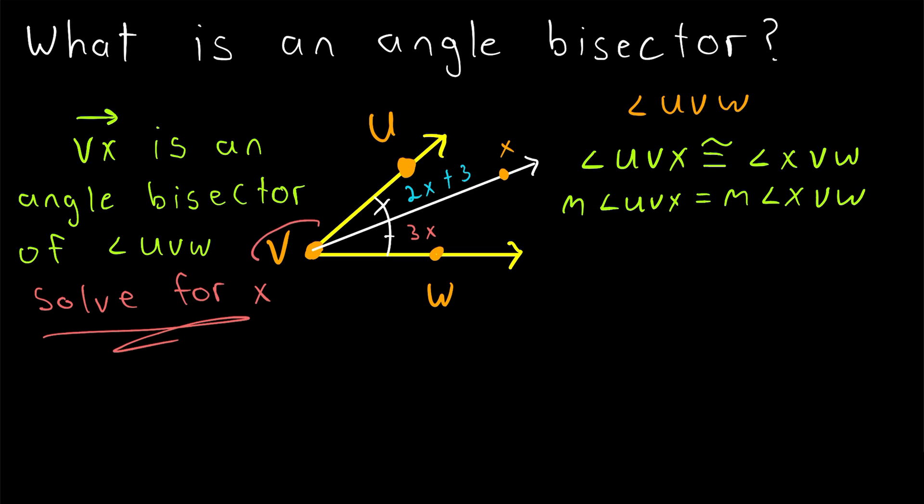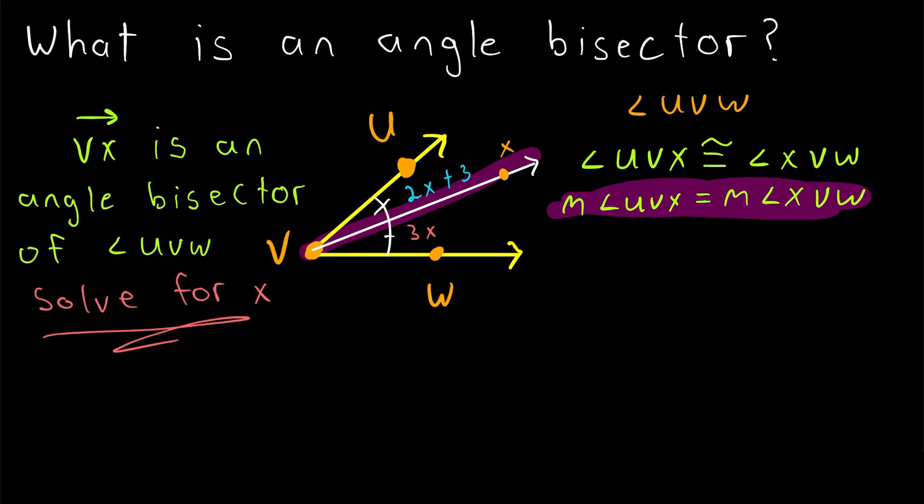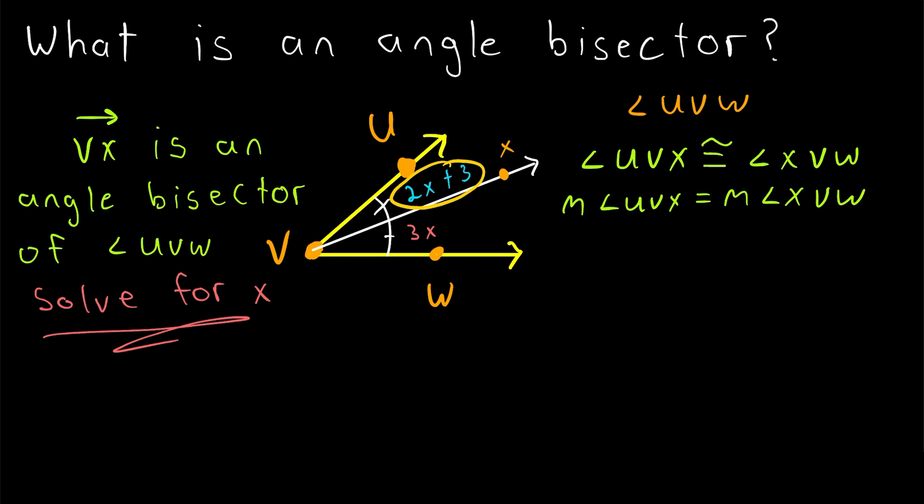It's very simple. Since VX bisects the angle UVW, it must be the case that these two angles have the same measure, like we wrote over here. That's what it means for the ray VX to be an angle bisector. Thus, we can solve for X by setting 2X plus 3 equal to 3X. These two angles have the same measure, so 2X plus 3 is equal to 3X.